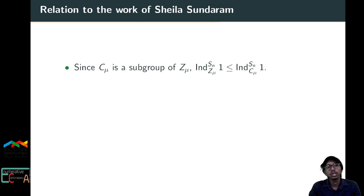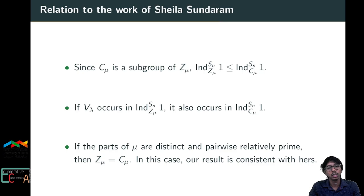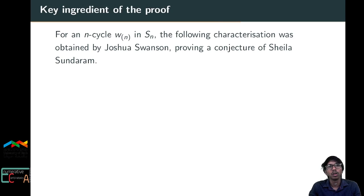Since C_{μ'} is a subgroup of C_μ, the induced representation of the trivial representation of C_{μ'} to Sn is a sub-representation of that of C_μ to Sn. So if V^λ occurs in the induction from C_μ, it also occurs from C_{μ'}. If the parts of μ are distinct and pairwise relatively prime, then C_μ equals C_{μ'}, making our result consistent.